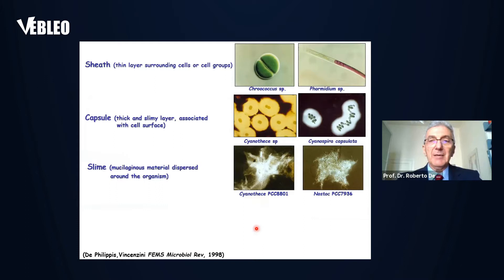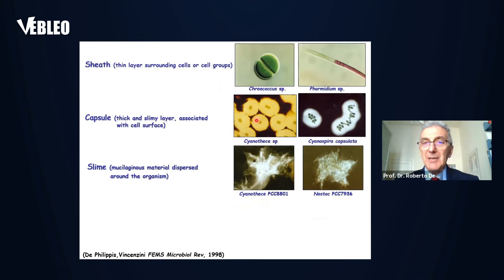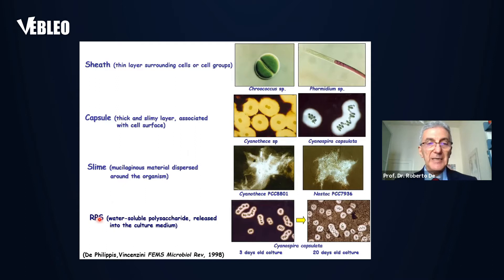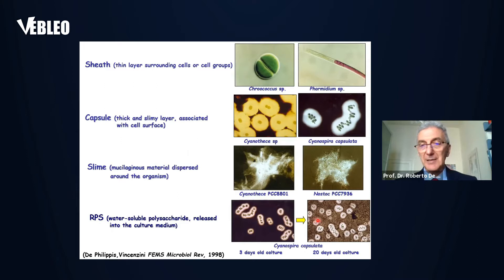You can find in cyanobacteria three different polysaccharide structures. The first is called sheath, which is a thin layer surrounding single cells or filaments. You can have capsules, which are thick and slimy layers surrounding single cells or filaments. And you can have slime, which is a mucilaginous material loosely connected with single cells and filaments. In all three cases, you can have the release of polysaccharides into the culture medium, obtaining the so-called released polysaccharide, RPS, which is soluble in water. Here you can see a very young culture without a lot of polysaccharides in the culture medium.